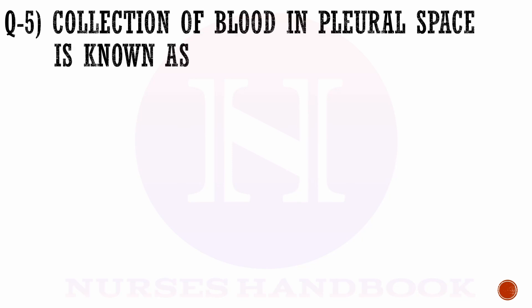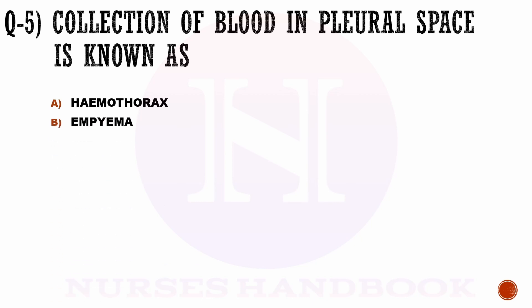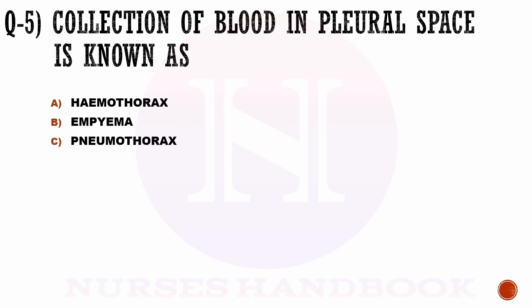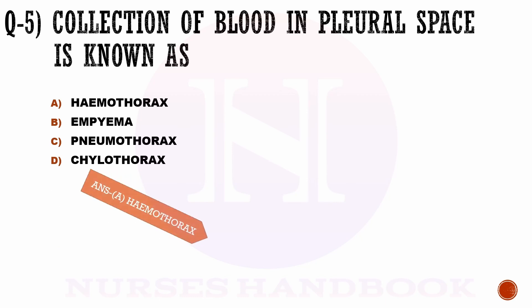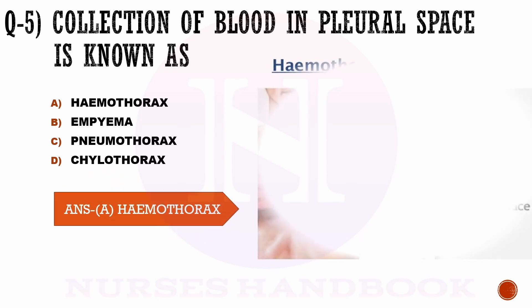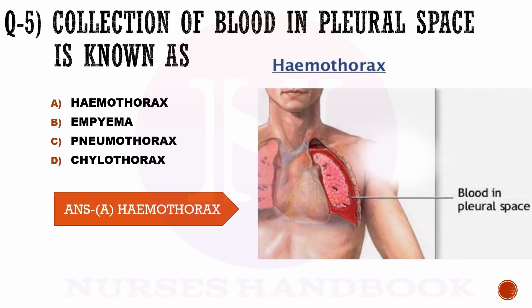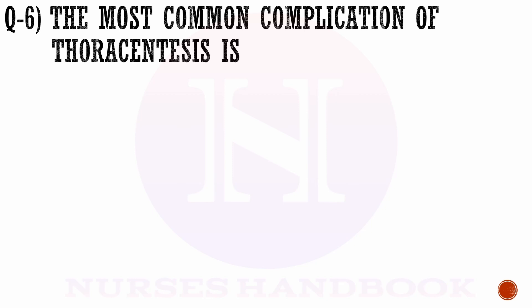Question number 5. Collection of blood in pleural space is known as: a) haemothorax, b) empyema, c) pneumothorax, and d) chylothorax. The correct answer is a, haemothorax.